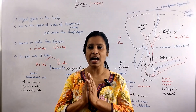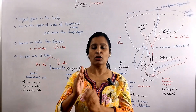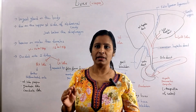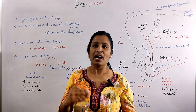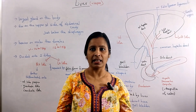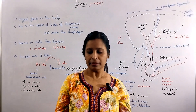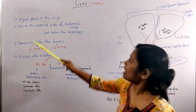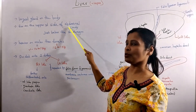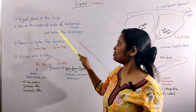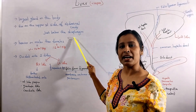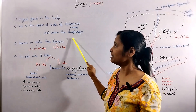Where is the liver? It lies in the upper right side of the abdominal cavity, just below the diaphragm. The abdominal cavity is on the right side.